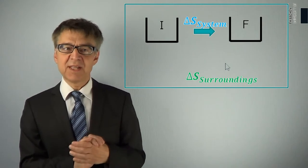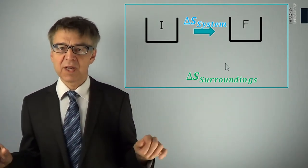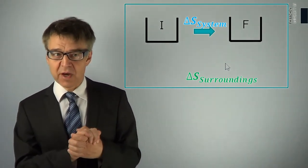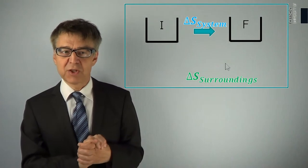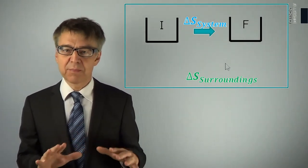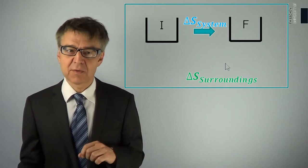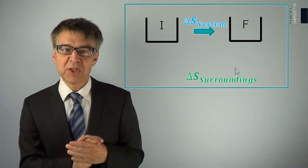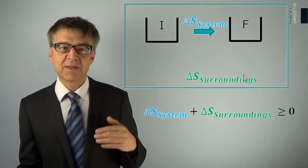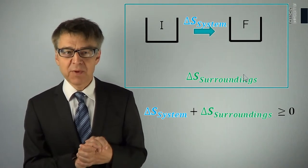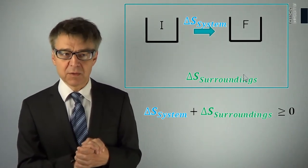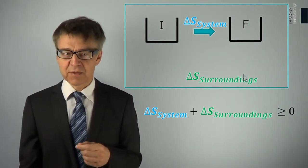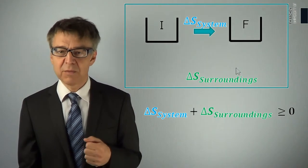The second law states that the entropy of the universe can only increase. Entropy is thus not conserved as mass, energy, or angular momentum. Entropy can be produced but not destroyed. For each and every process, the entropy change of the system plus the entropy change of the surroundings must be greater than or equal to zero. The limiting case of equal to zero is called a reversible process; all other cases are irreversible.